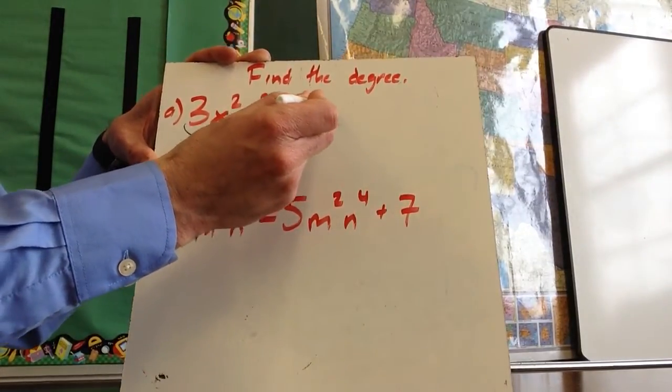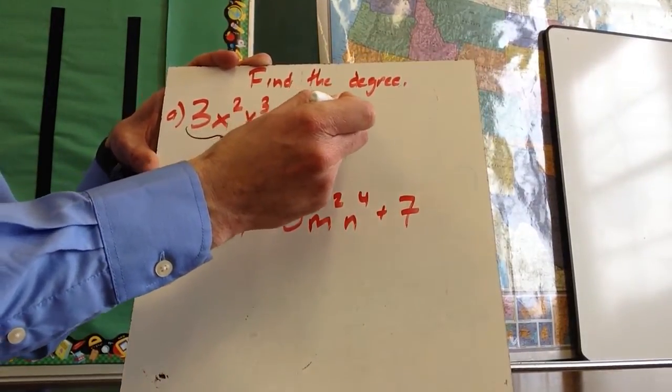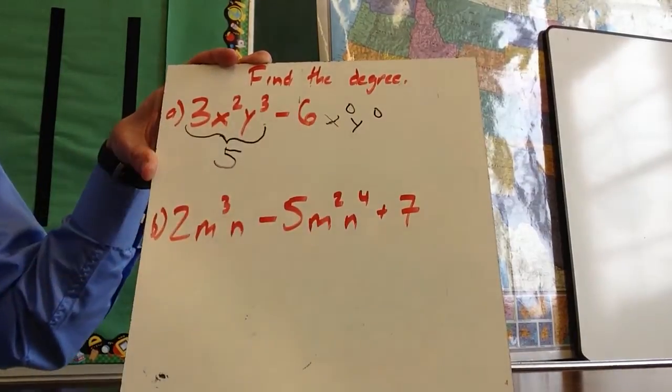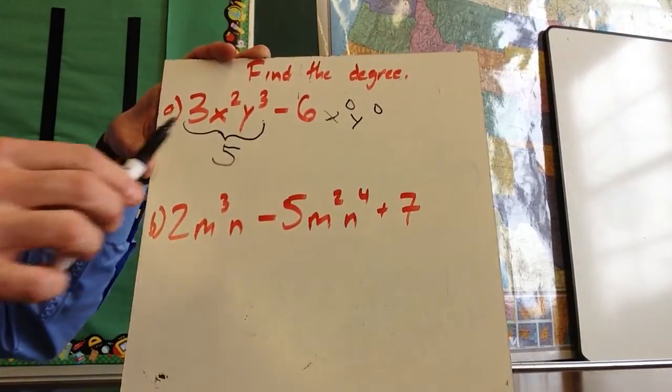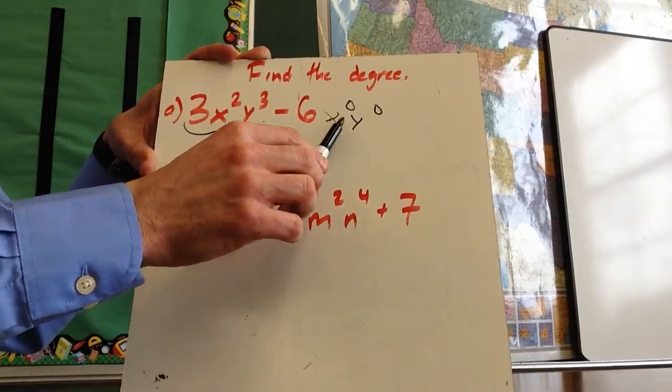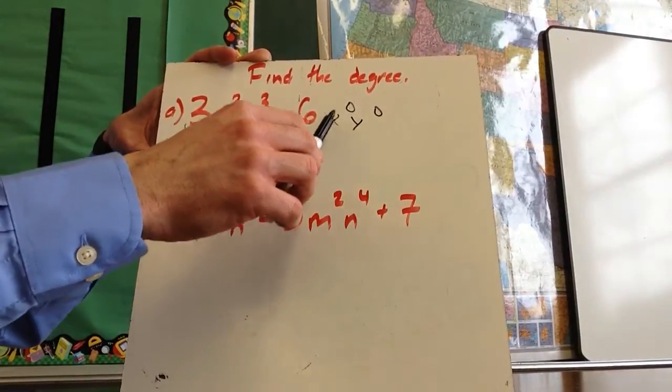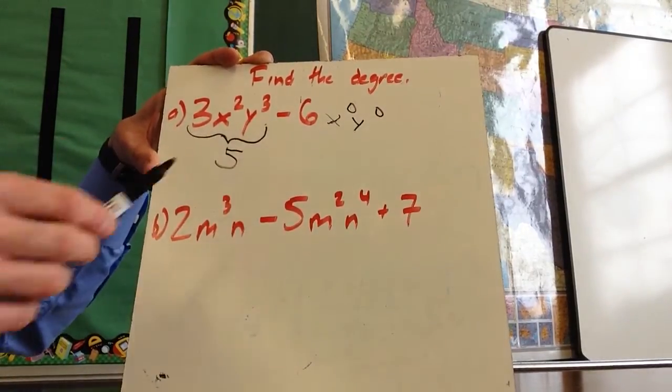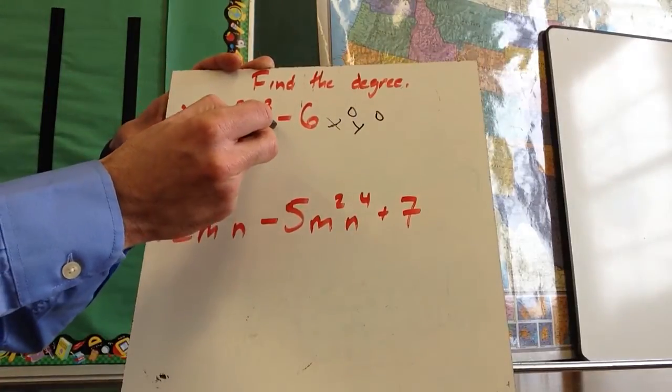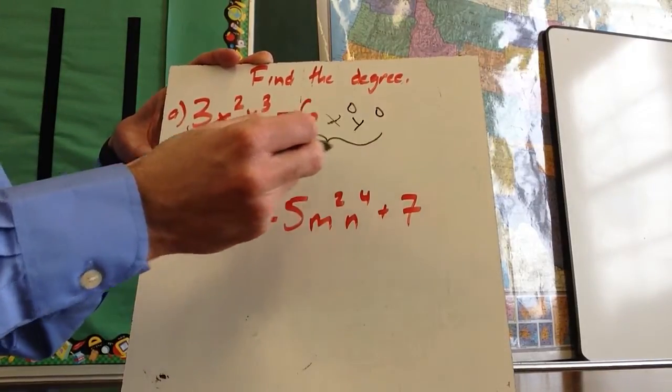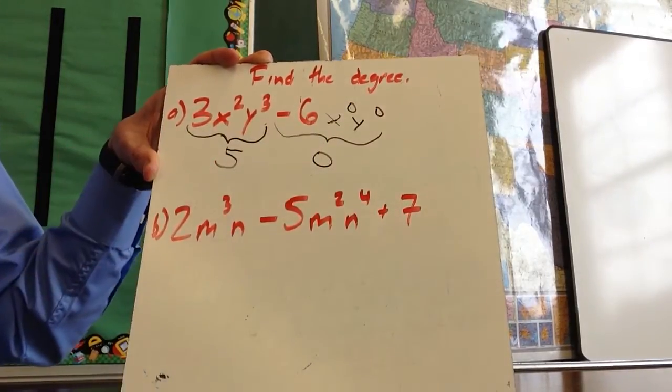This also, if you think about it, has an x to the zero and a y to the zero, because each of those is one. You don't have to write that, but just keep in mind that this is x to the zero, y to the zero. So this is negative six, x to the zero, y to the zero. Each of these has a zero, so this one has a power of zero.